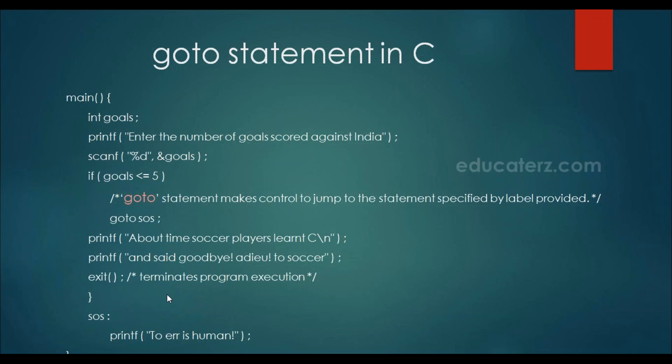Goto can be used when we want to come out of nested loops. As we have seen, if we use break in a loop, we can only break the current loop in which break is executed. But if we have two or three loops nested and on a particular scenario we want to come out of all the loops, then we can use goto. We will check this out programmatically.